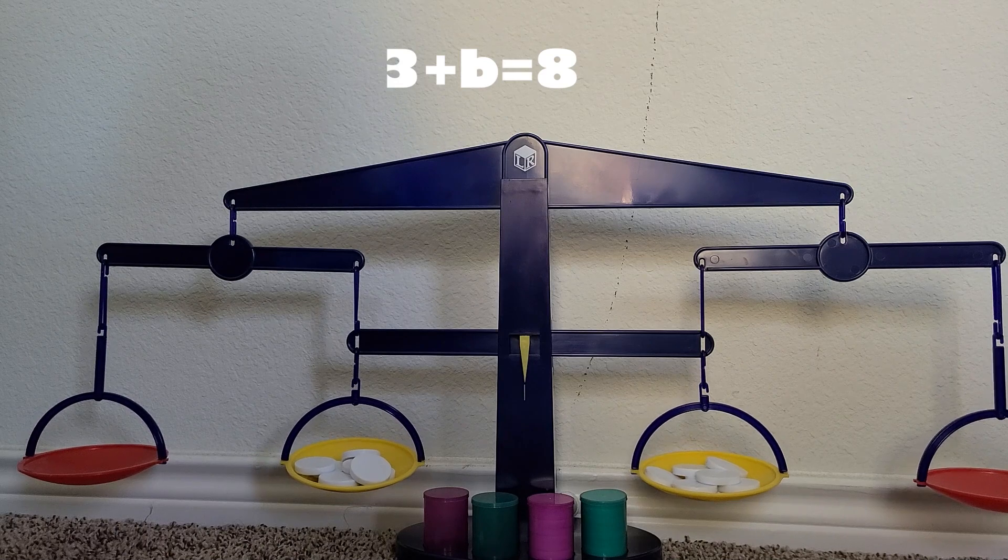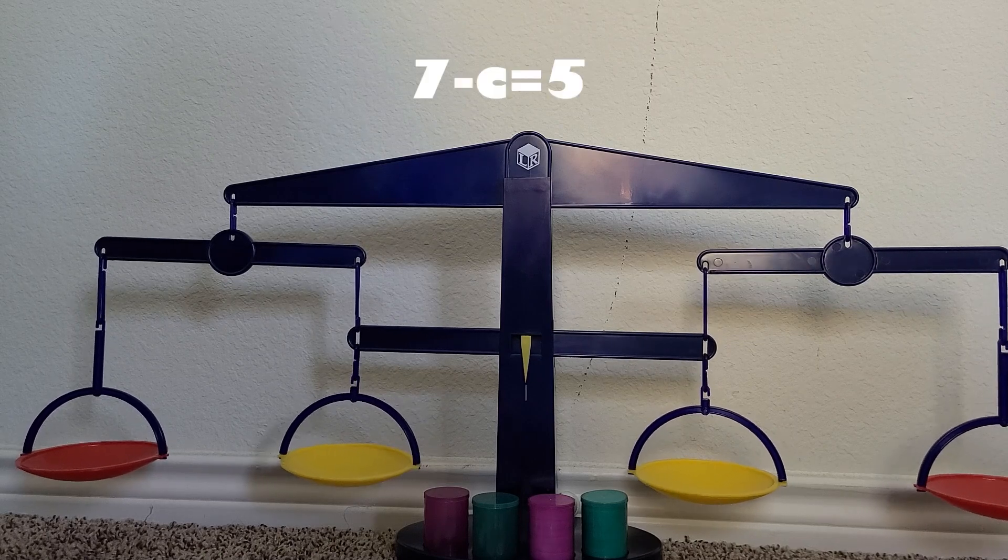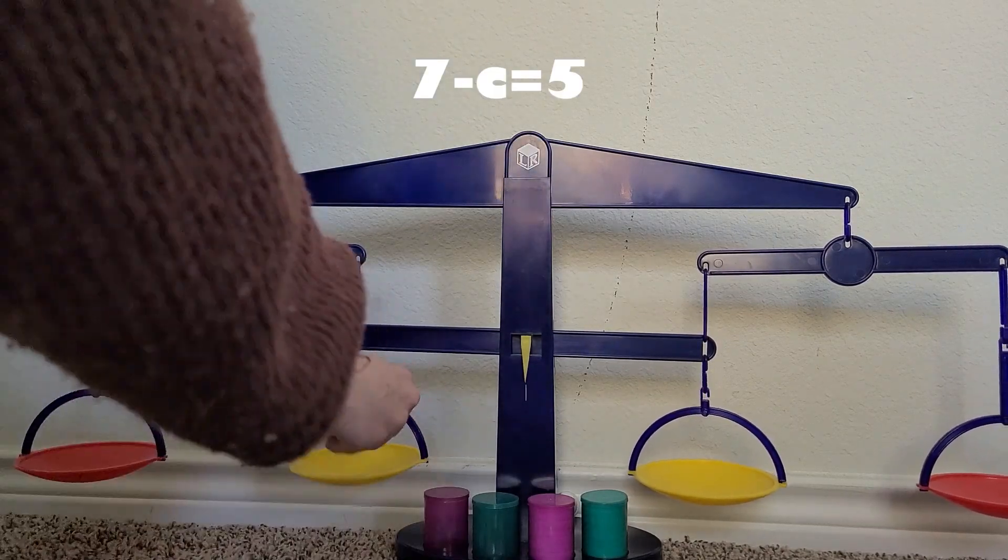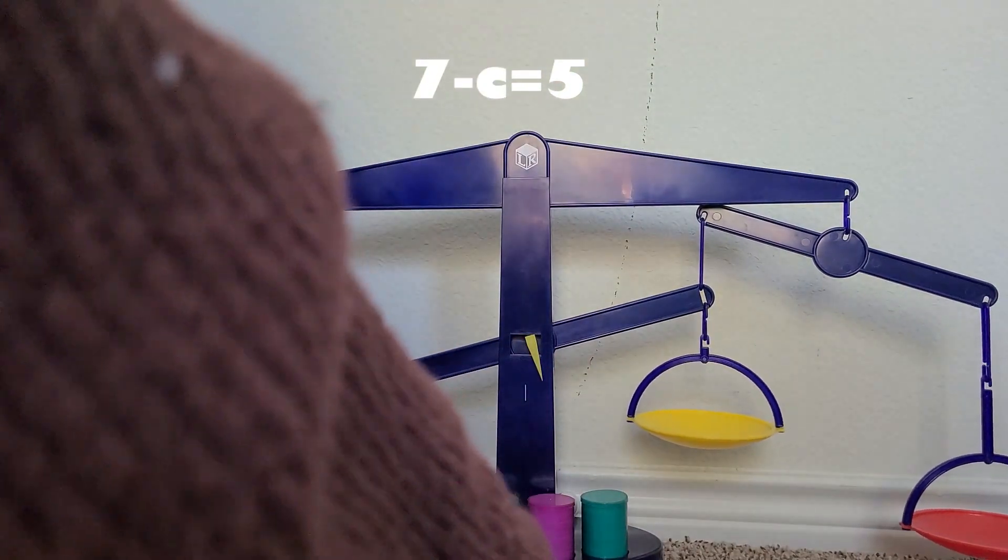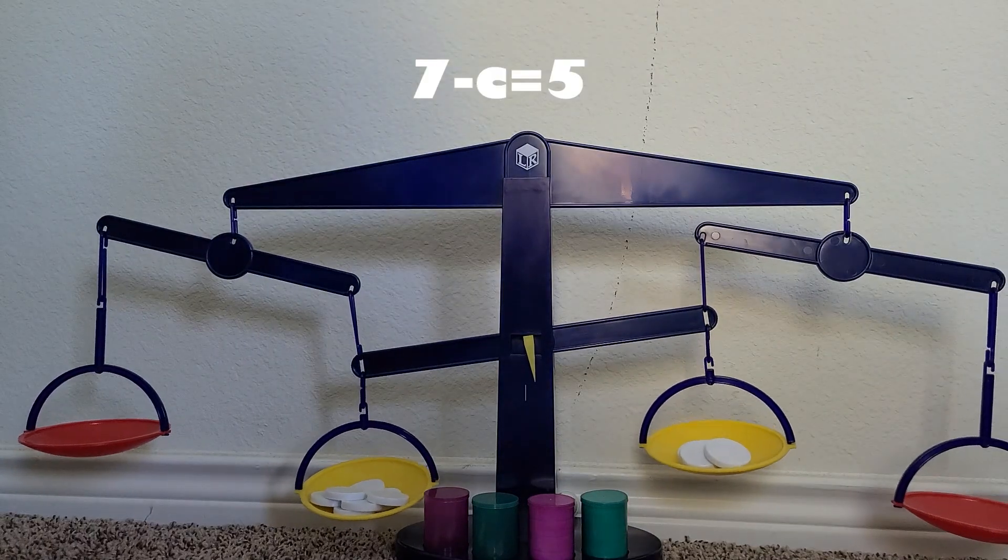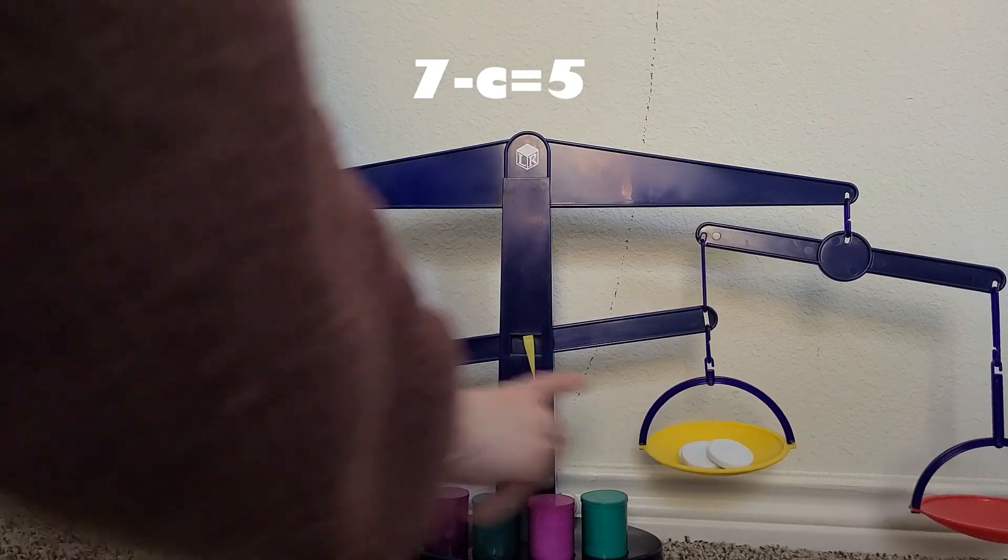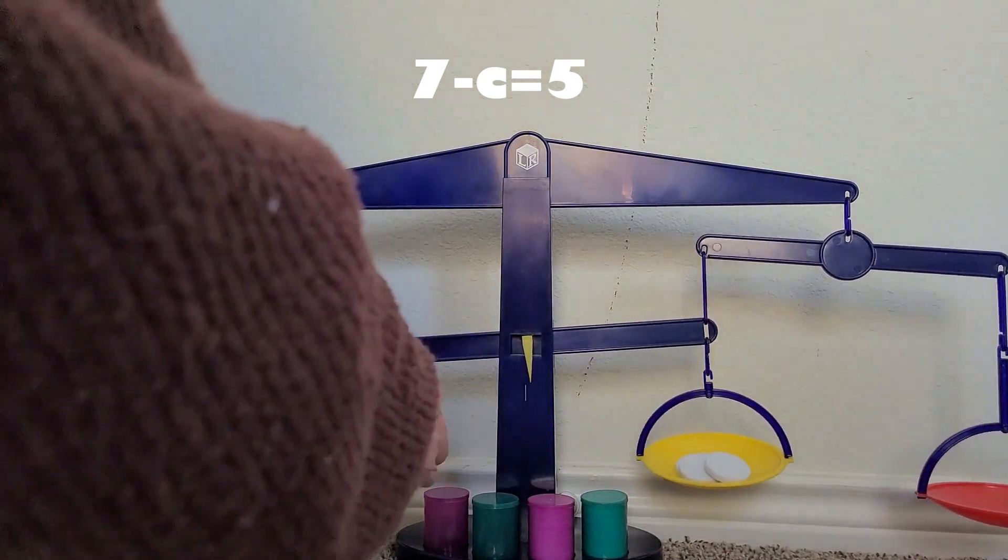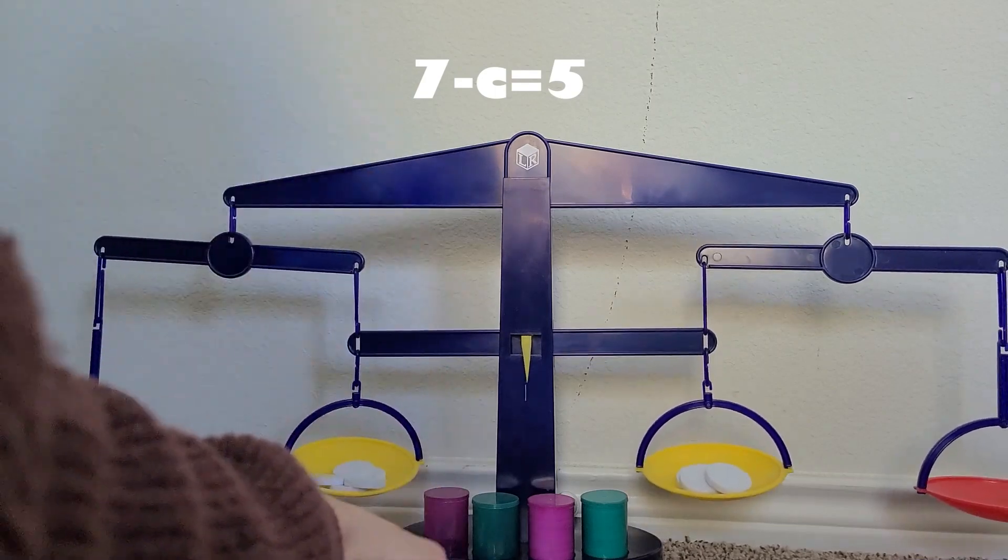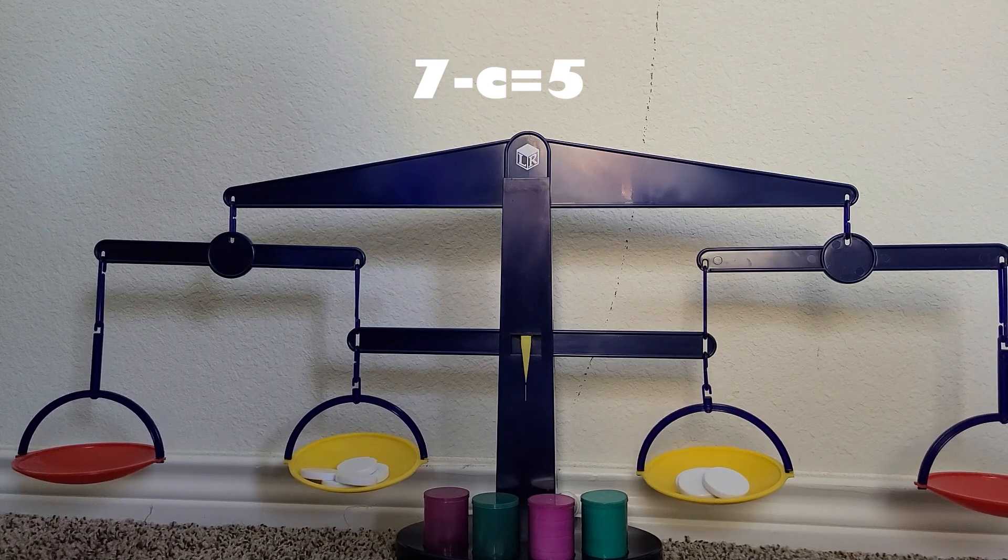I want to show the simple equation seven minus C equals five. So I'm going to start over here with seven. And then over here, I'm going to have the five. And then I can just think about it like this balance. So what do I need to take away from this side to get it equal? I think you got it. Seven minus two. So if I just take away two chips, then I have got a balanced equation. So that means C equals two.